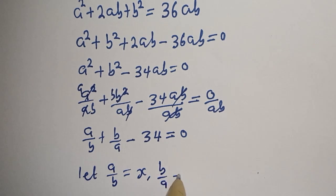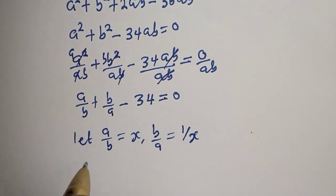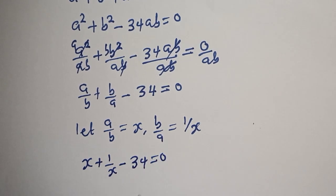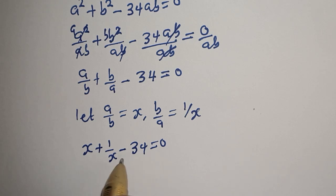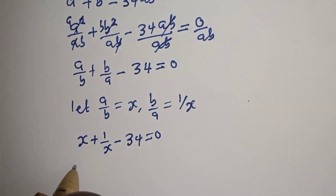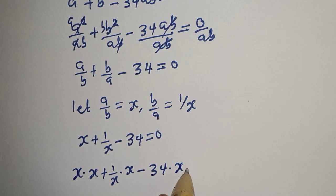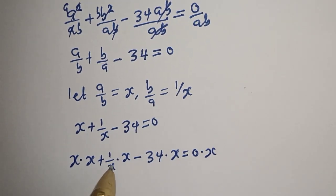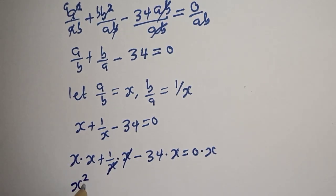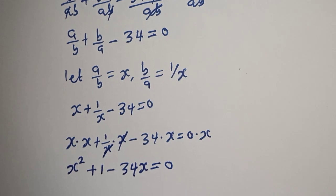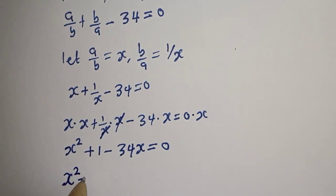Let S equal A over B. Multiplying both sides by S, we have S times S plus 1 over S times S minus 34 equals 0, which simplifies to S squared plus 1 minus 34S equals 0. Rearranging: S squared minus 34S plus 1 is equal to 0.